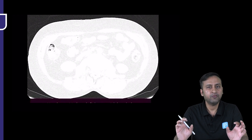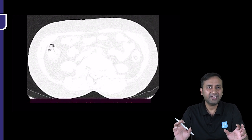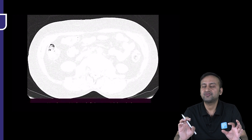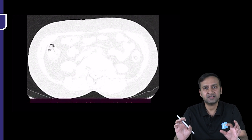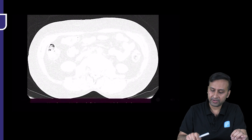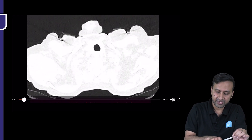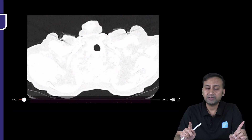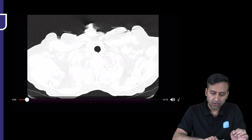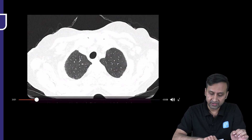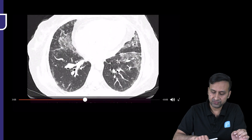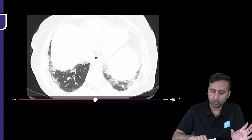If you can answer these three questions in a schematic manner, almost half of your diagnosis is made. Nobody expects you to give a histopathological diagnosis, but if you can answer these three points as a resident or practicing radiologist, that is more than enough. So again, looking at this image: first, are we dealing with an ILD? Yes, it's a diffuse lung disease because we can see a pattern extending throughout the lung fields in a bilateral symmetrical manner.